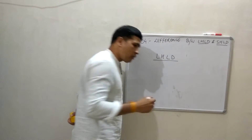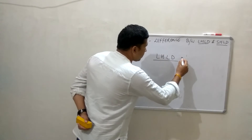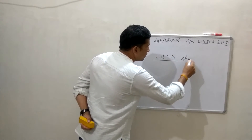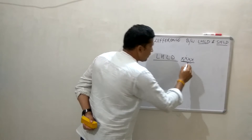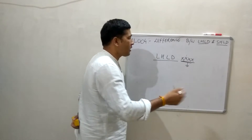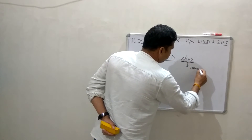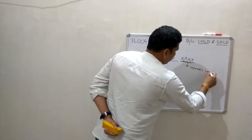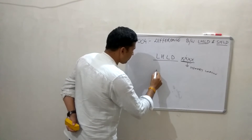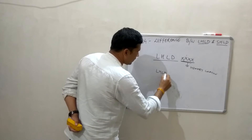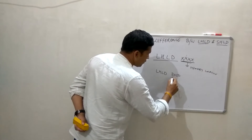Firstly, how do we represent this instruction? Basically this represents a memory address and location. Suppose I am writing LHLD 2050.